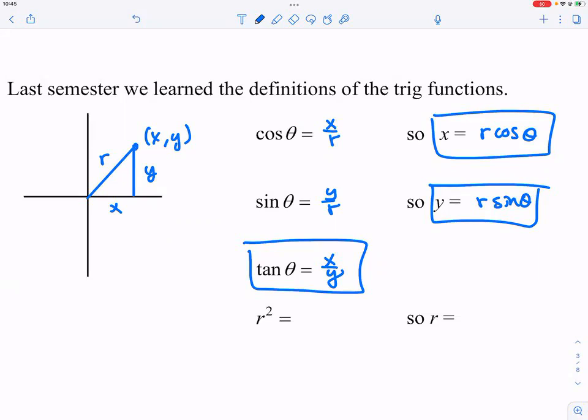And then what's R squared? Well, Pythagorean theorem, right? X squared plus Y squared equals R squared.